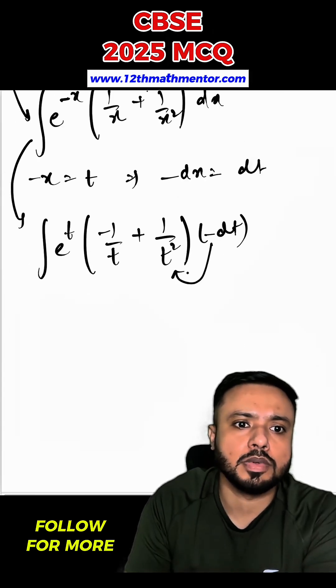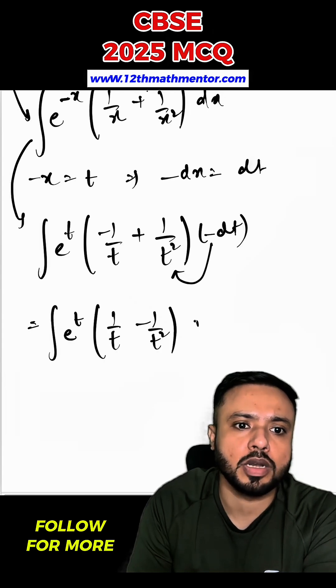We will take this negative sign inside the bracket. So I can write it as e raised to the power t, 1 by t minus 1 by t square dt.